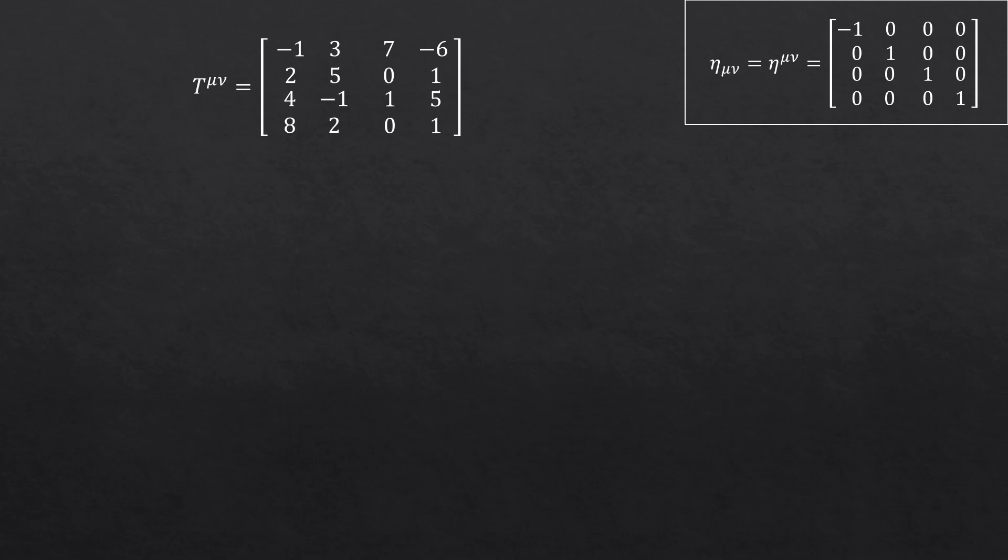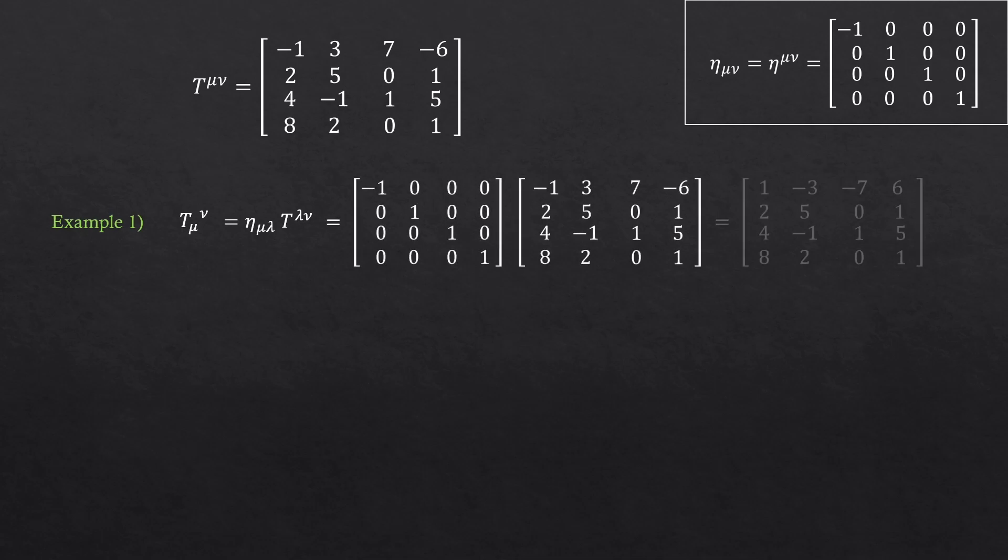Let's now try with a rank 2 tensor. Example 1, we want to lower the first index mu. What should we do? We first rename one of the indices. I just chose lambda nu and contract with the metric mu lambda by cancelling the lambdas. So again, this is just a matrix multiplication.